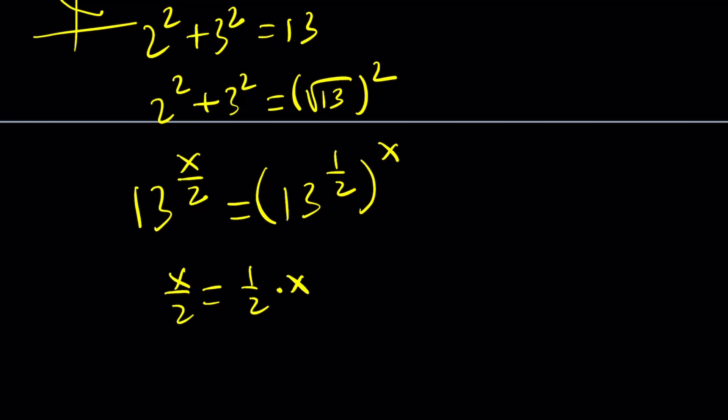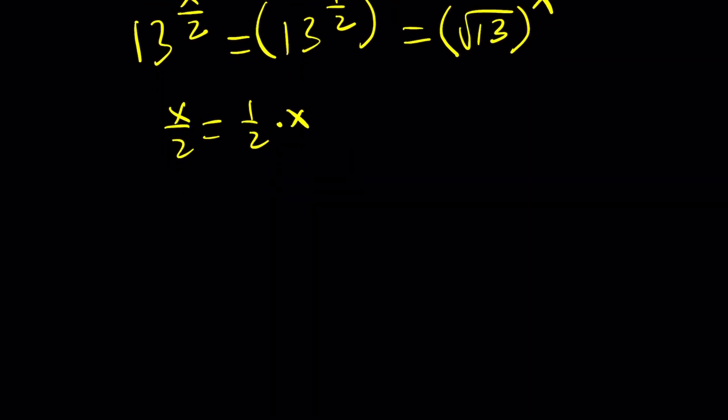If you find the half of a number, you divide it by 2. 13 to the power 1 half is the square root of 13. We're looking at real numbers here, so it's the real valued square root, and it's unique. Let's rewrite our equation: 2 to the x plus 3 to the x equals square root of 13 to the power x.